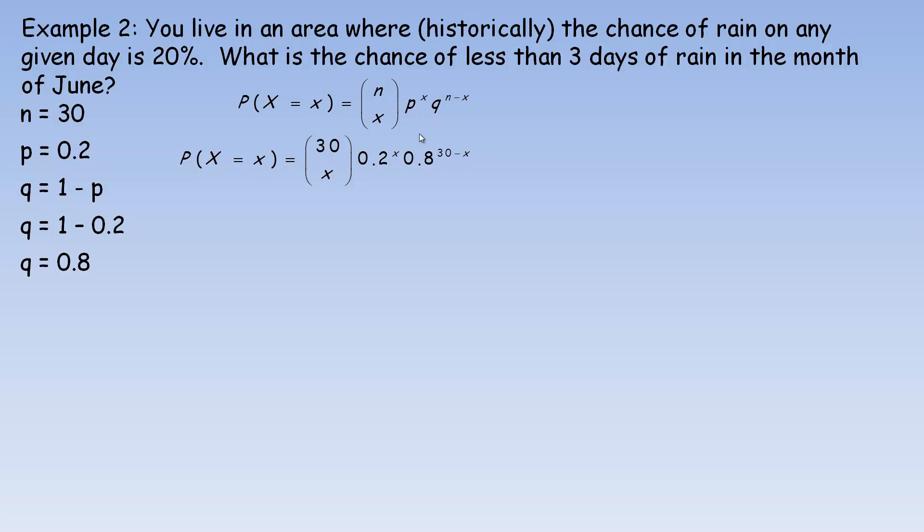So that's what we would use to calculate the probability of a certain number of days, x number of days of rain. Now we're asked to find the chance of less than 3 days. So if the random variable is less than 3, that includes no days of rain, 1 day of rain, and 2 days of rain. We wouldn't include 3 because 3 isn't less than 3. So we need to calculate each of these individually using this and then add those 3 probabilities up. For 0, the probability of no days of rain, we put 0 here, here, and here. That's that calculation. For 1 day of rain, 1 goes here, here, and here. So that's that calculation. And for 2 days of rain, we put 2 here, here, and here, and that would be that calculation.